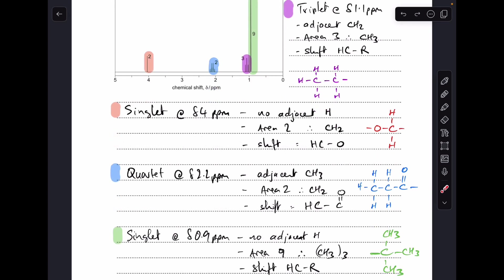Finally, the singlet at roughly δ 0.9 ppm. Remember, singlet means there's no adjacent hydrogens to the ones causing the signal. Area 9 means we've got three equivalent CH3 groups in the environment, and shift is H-C-R.